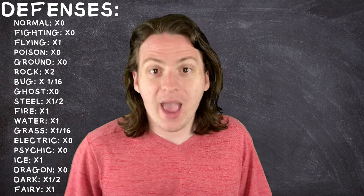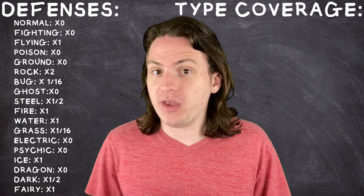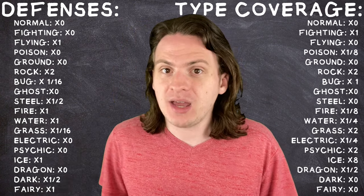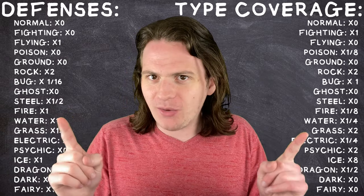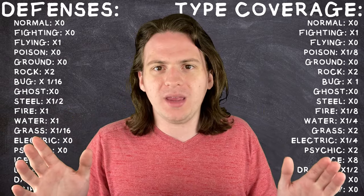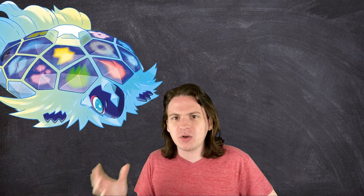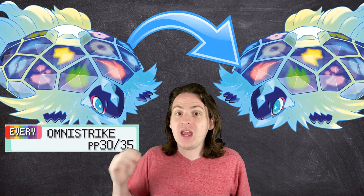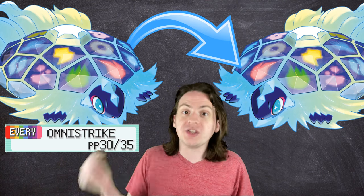And there you have it. A Pokemon with every single type is a very good defensive Pokemon. An attack with every type, on the other hand, kind of sucks. Now, I could end the video there, but I know what you're all thinking. And you know what? We've come this far. I might as well see it through to the end. If you had a Pokemon of every single type attack another Pokemon of every single type with an attack that was every single type, what's going down?